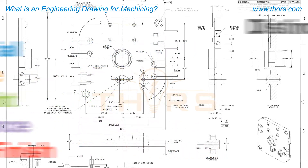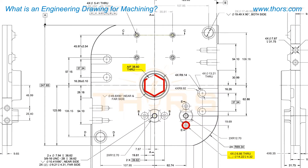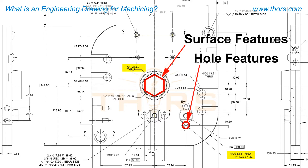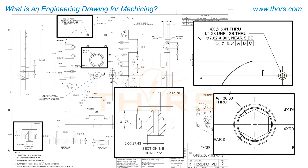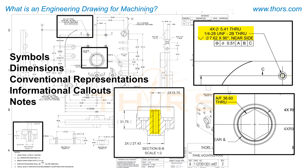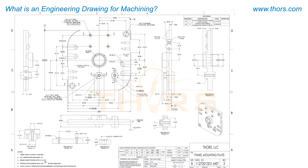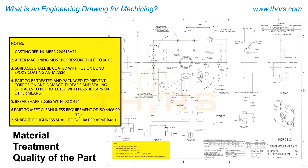Features commonly seen on a machining drawing can be classified into two categories: surface features or hole features. These features of a part would be accompanied by various symbols, dimensions, conventional representations of how the feature is shown, informational call-outs, and any notes. Additionally, information pertaining to the material, treatment, or quality of the part will be found in the notes section.